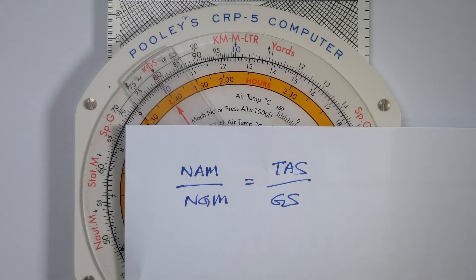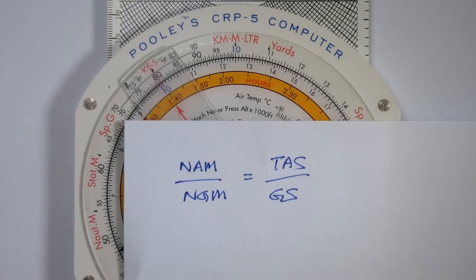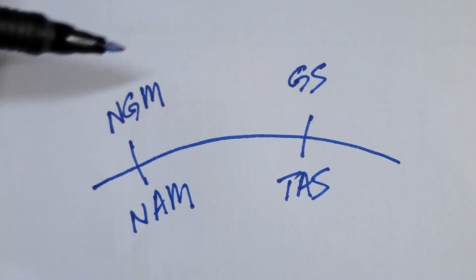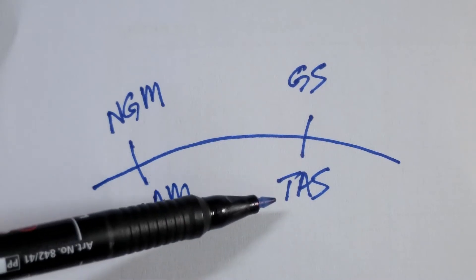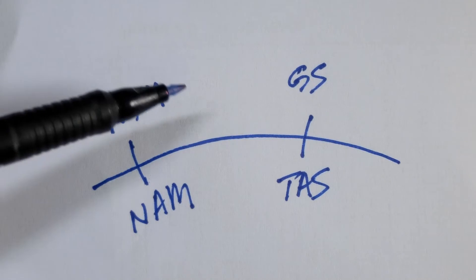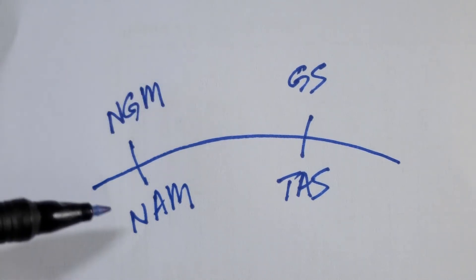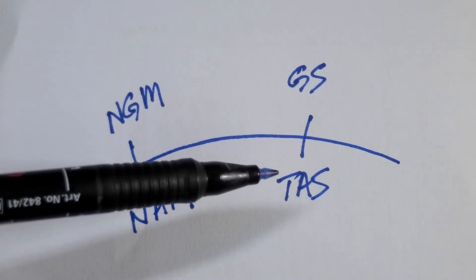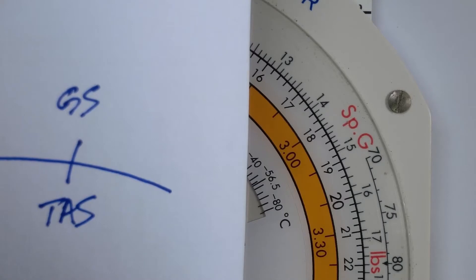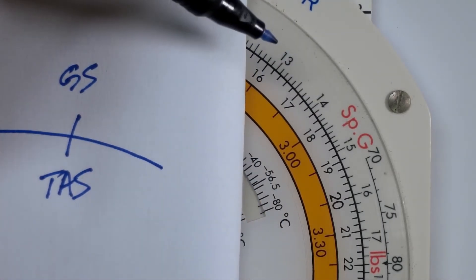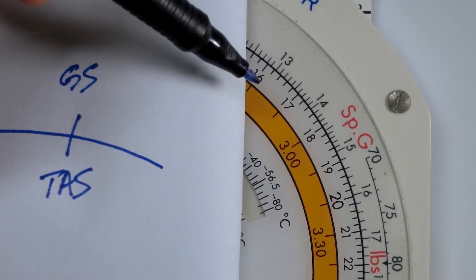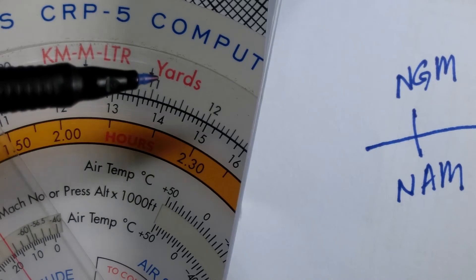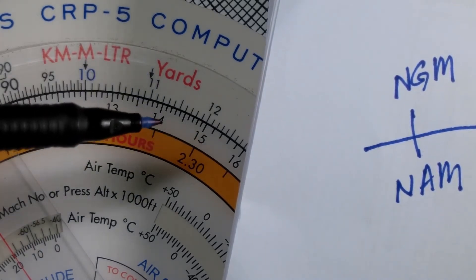Here's how we will substitute these variables into the CRP5. We will put all the ground stuff on the outer scale of the CRP5 and all the air stuff on the inner scale. So if we know what the nautical ground miles are, we'll put it on the outer scale, and if we know what the nautical air miles are, we'll put it on the inner scale. The same applies for ground speed and true air speed — ground speed on the outer scale, true air speed on the inner scale. So we're going to read nautical ground miles on the outside and nautical air miles on the inside.